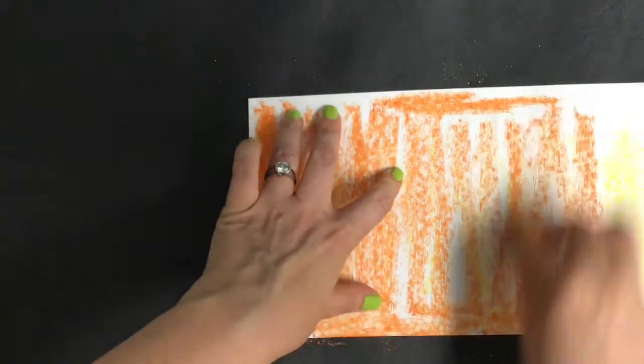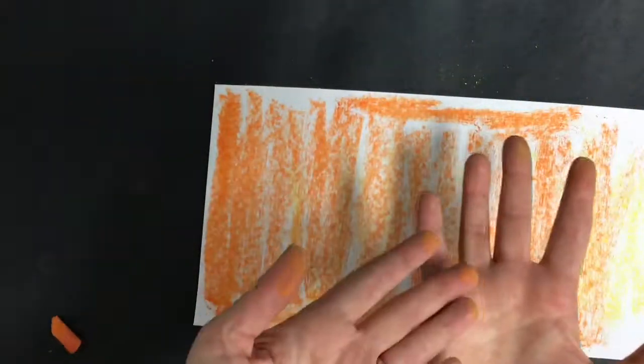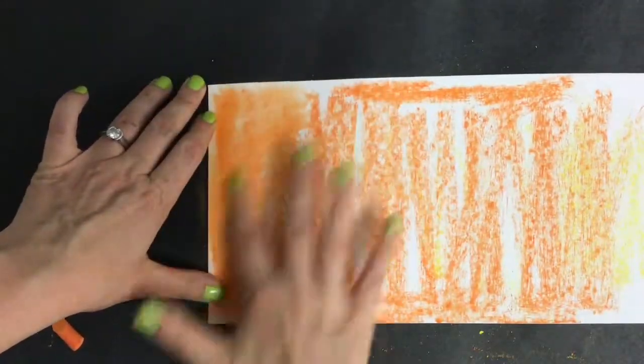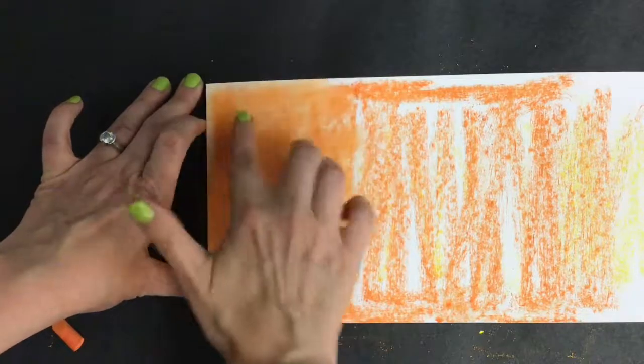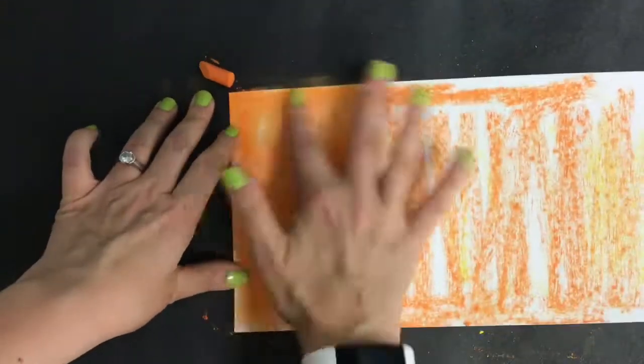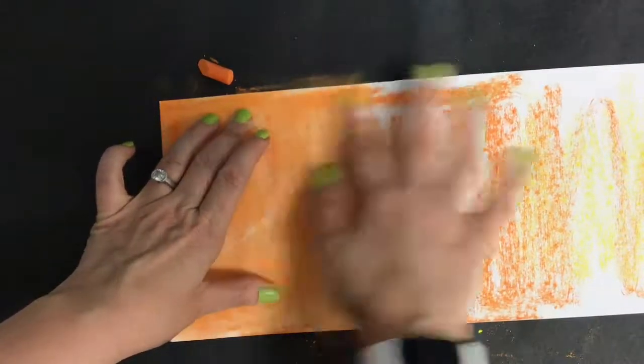Next, start with your second color and go ahead and color your second color also to fill the page. As you blend, you want to make sure that you're blending only with one or two fingers. You don't want to use your entire hand. If you use your entire hand, you're going to make a mess on your hand and your table, and you won't get enough wipes to clean it up, and you're going to end up going home with some dirty hands.